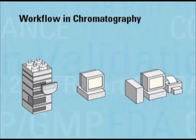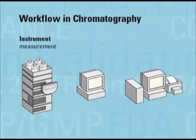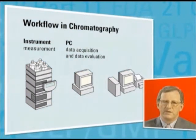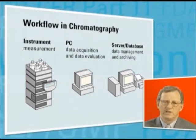Here is a simplified diagram of a typical chromatography system. It shows three basic blocks. The first block represents the measurement instrument — this could be a gas chromatograph, a liquid chromatograph, or an LC-MS. Typically, the instruments are controlled by a computer shown in block 2. The computer acquires and processes data such as measuring peak area and calculating quantitative amounts. The data may then be transferred to a server shown in block 3 for archiving and data management.